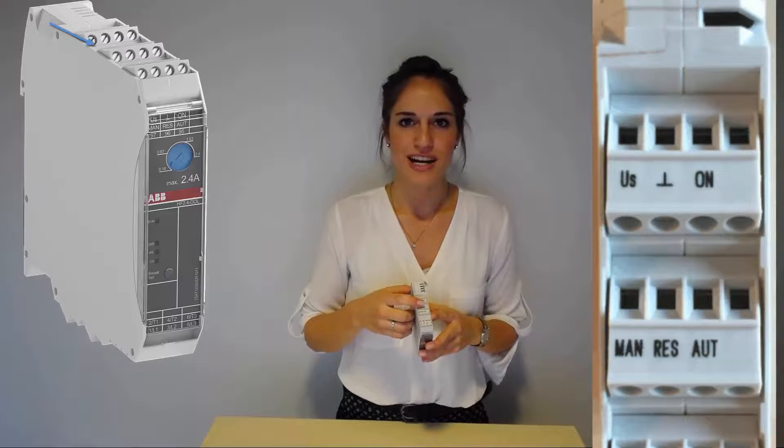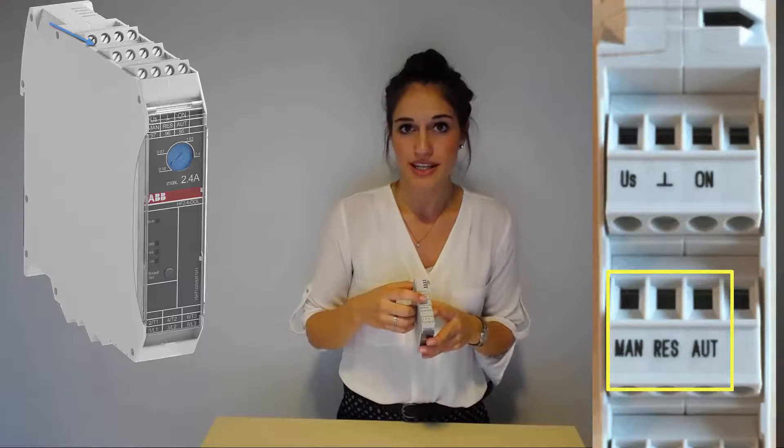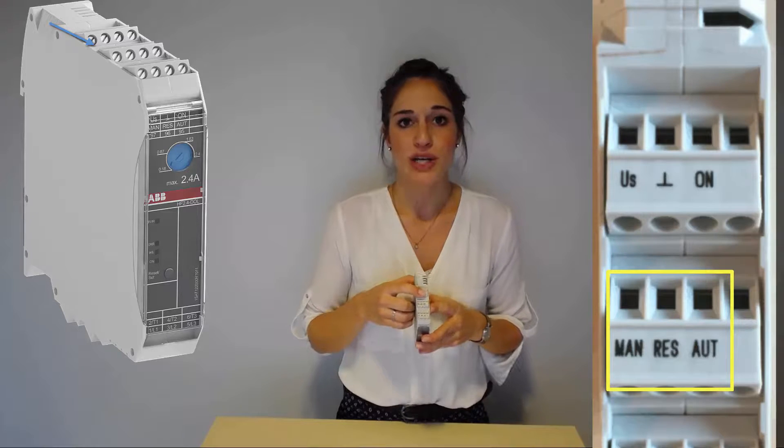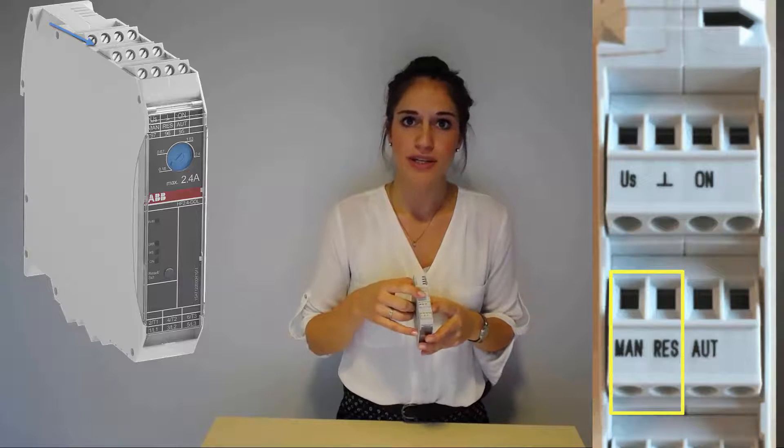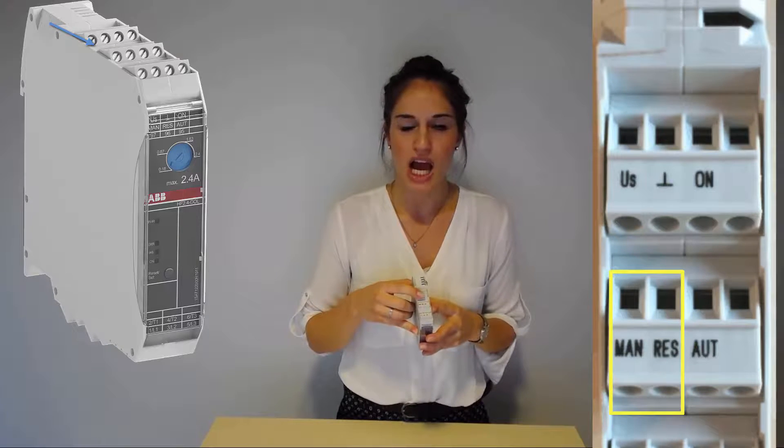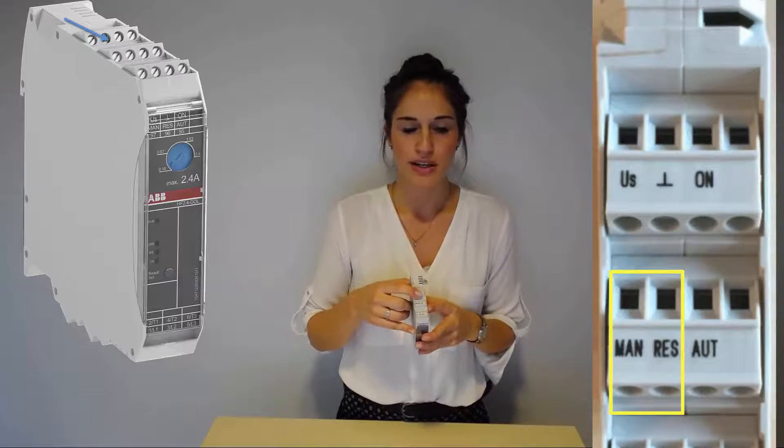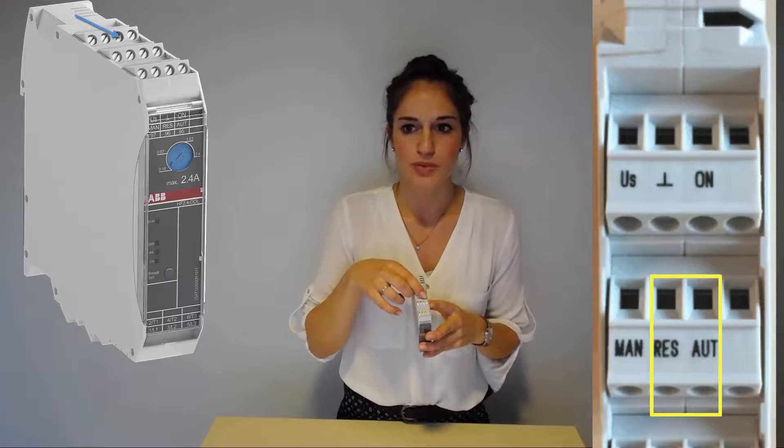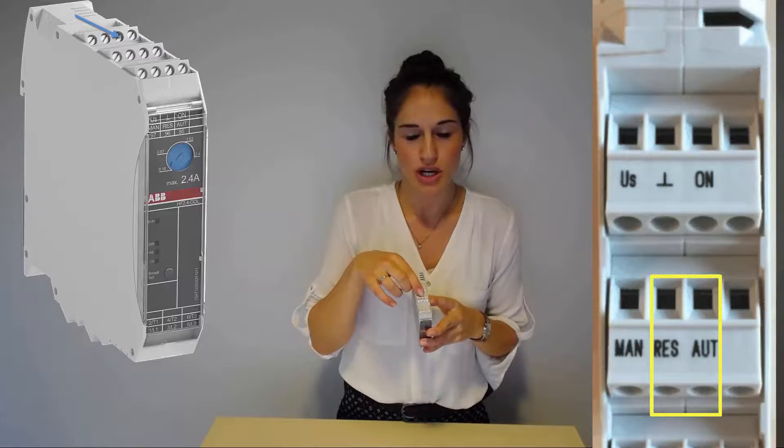After the overload function has tripped, the HF range can be reset automatically or manually. For manual reset, connect the push button with a normally open contact between the MAN and the RES terminals. For automatic reset, establish an electrical connection between the RES and AUT terminals.